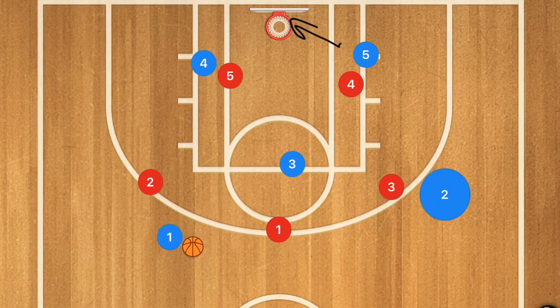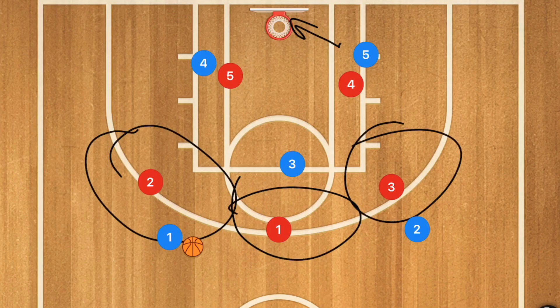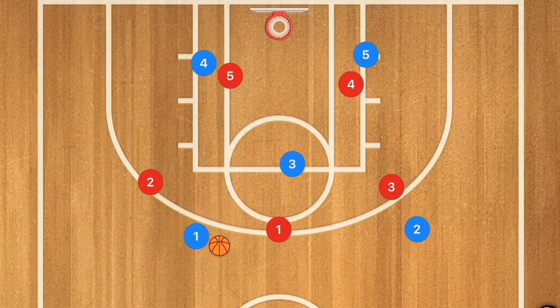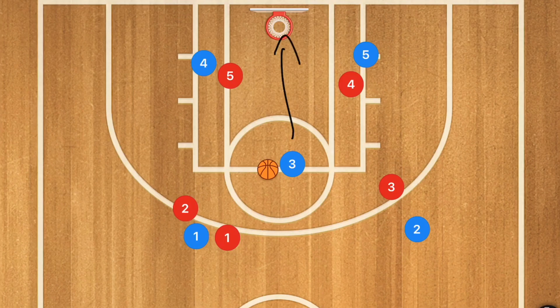Now let's check out a couple of plays against a 3-2 zone. With a 3-2 zone we have to know the bubbles — the double team locations — up top. What I want is player one to attack the gap between players one and two. That's going to collapse those two players, we'll have a pass into player three, and he can take that shot.